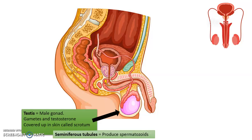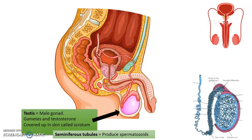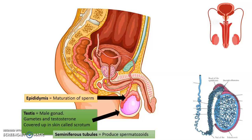Inside the testes we have special tubes known as seminiferous tubules, which is the actual place where the testes produce sperm. If we see a transverse section of a testis, we can see these coiled tubes where the spermatozoids are formed. They will then mature and differentiate in the next organ known as the epididymis. The sperms are formed here and travel to the epididymis, where they mature and acquire their function.